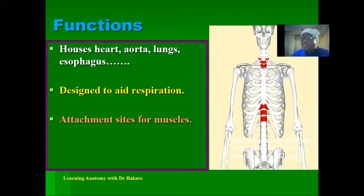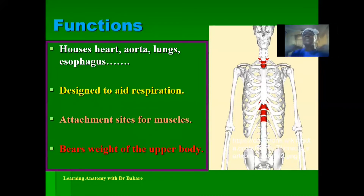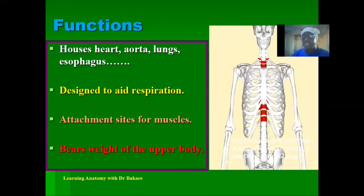Additionally, muscles also attach onto the thoracic cage. It also helps to bear the weight of the upper region of the body. The thoracic cage helps to carry the weight of the head and the neck region because the head and the neck are located superior to it, so it absorbs or carries the weight of this region.